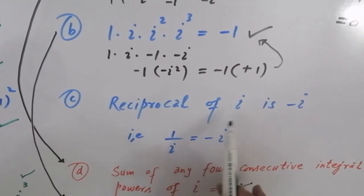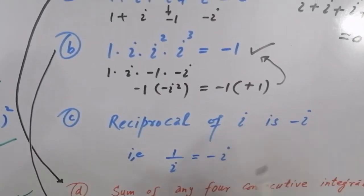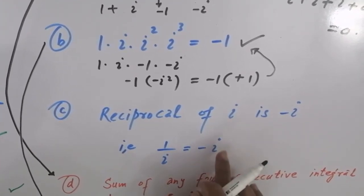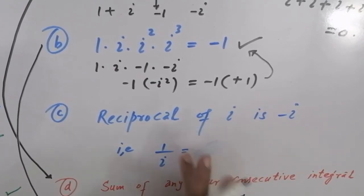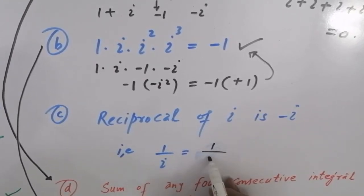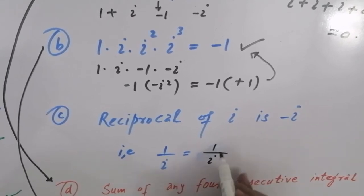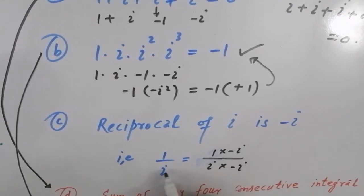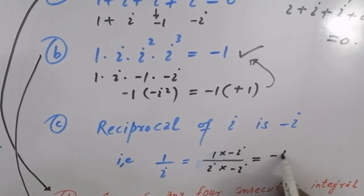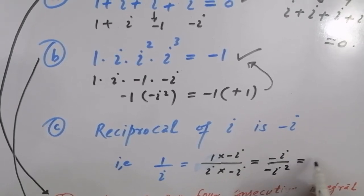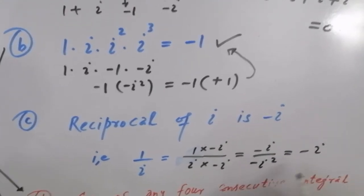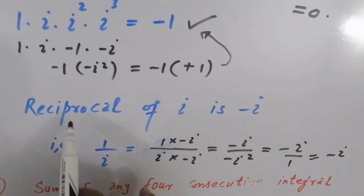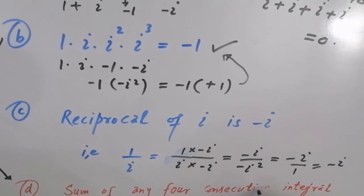The reciprocal of IOTA is always minus IOTA۔ Reciprocal کا مطلب 1 over IOTA۔ IOTA کے complex conjugate minus IOTA سے multiply کرتے ہیں: (1/IOTA) × (−IOTA/−IOTA) = −IOTA / (−IOTA²) = −IOTA / (plus 1) = minus IOTA۔ So the reciprocal of IOTA is always minus IOTA.